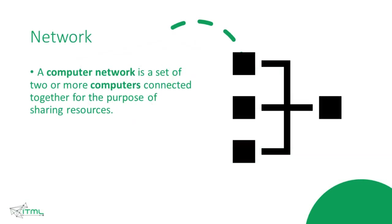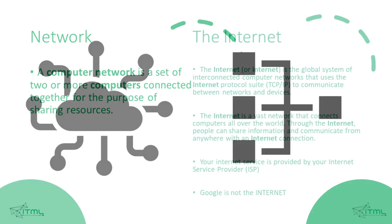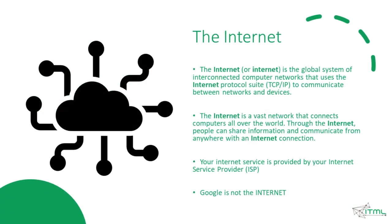Let's see some very basic terms. A network or computer network is a set of two or more computers connected together for the purpose of sharing resources. The internet that everyone knows is not just a device — it is a vast network that connects computers all over the world. We call the internet the global system of interconnected computer networks that use the internet protocol suite to communicate between networks and devices.